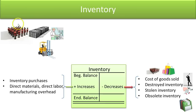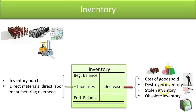Inventory — these are all the products you plan on selling to customers. Inventory increases when you buy more inventory or when you're manufacturing: it includes direct materials, direct labor, and overhead costs that go into producing the product. Inventory goes down if you sell the goods (recorded as cost of goods sold), if the inventory gets destroyed, stolen, or becomes obsolete and you throw it away. If any of these happen, you no longer have an asset because there is no future benefit.